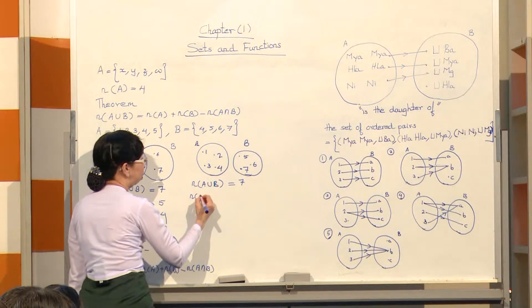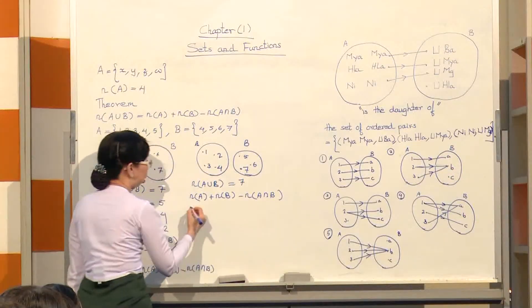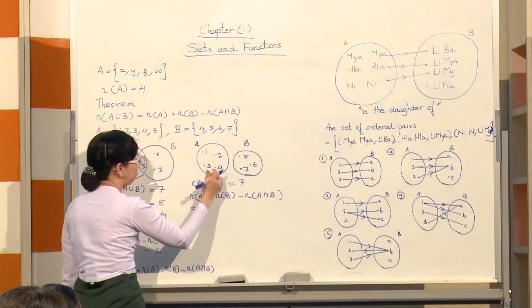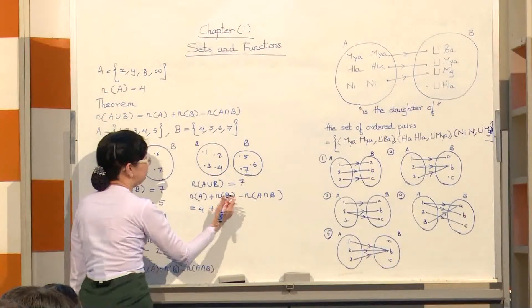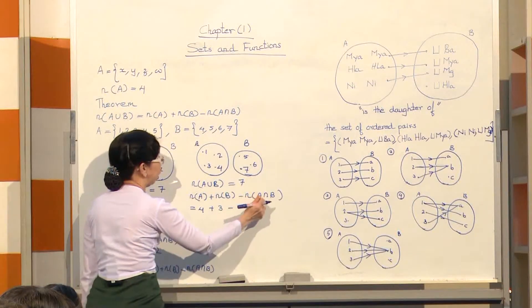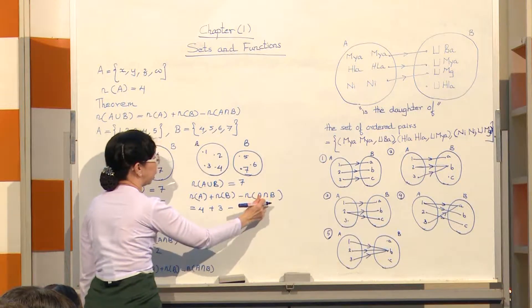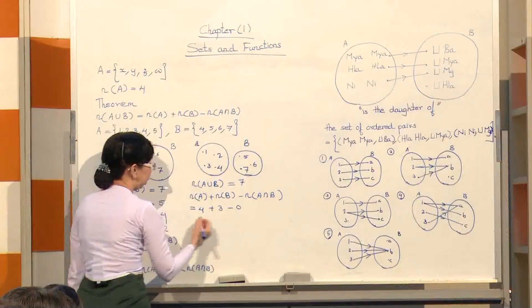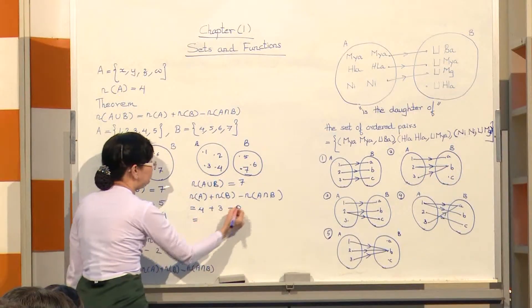Number of A plus number of B minus number of A intersect B: number of A is 4, plus number of B is 3, minus number of A intersect B is 0, equal to 7.